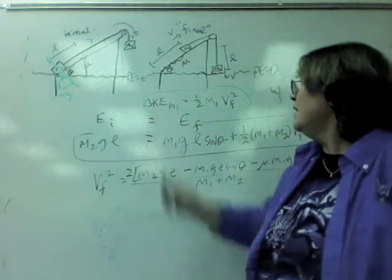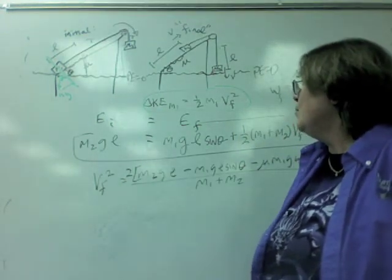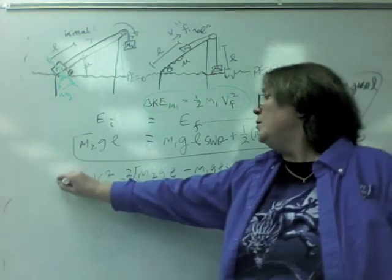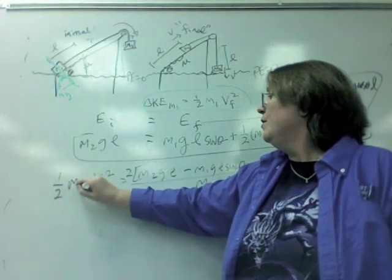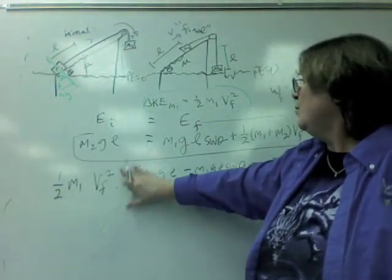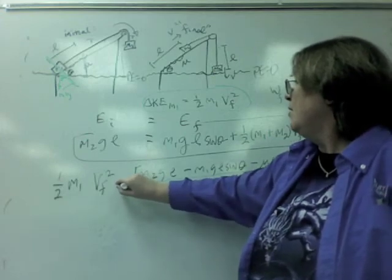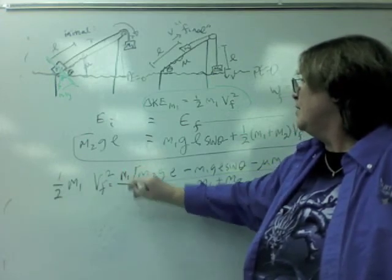And, that will give us the velocity squared. So, in order to get the kinetic energy of M1, the change would be, it would go from zero to this much. The twos would go away.